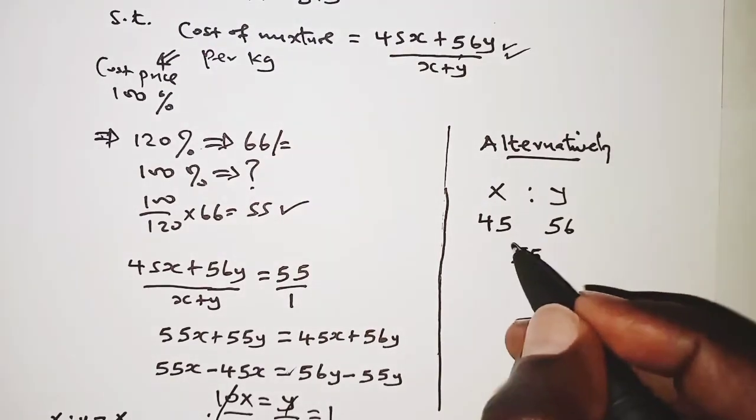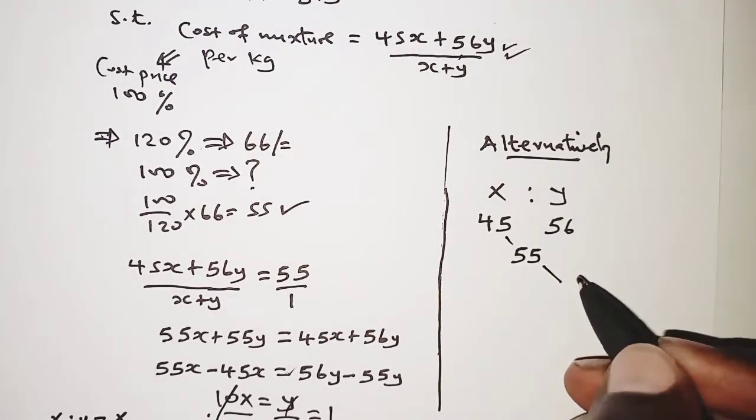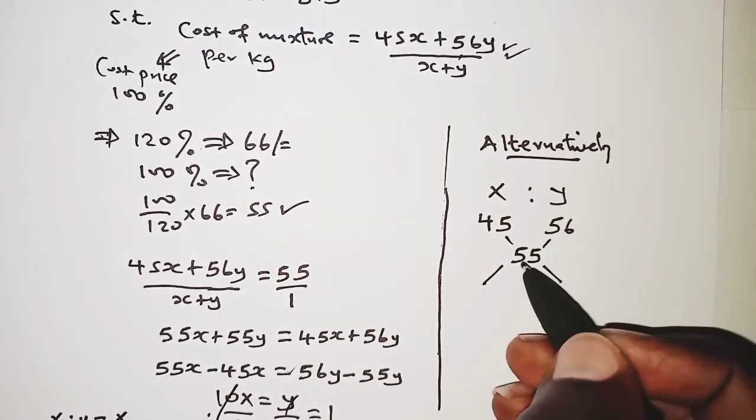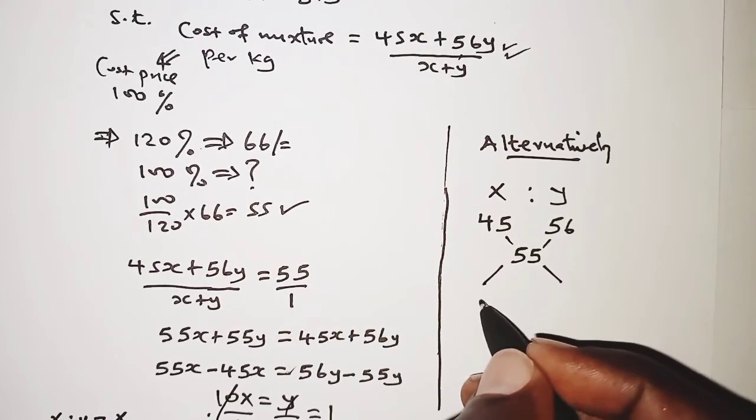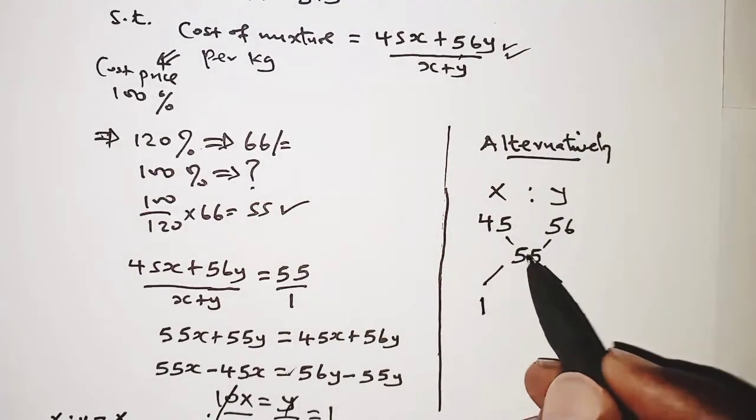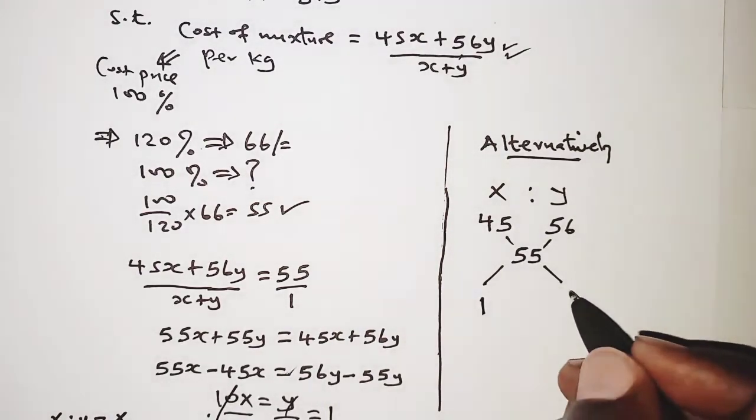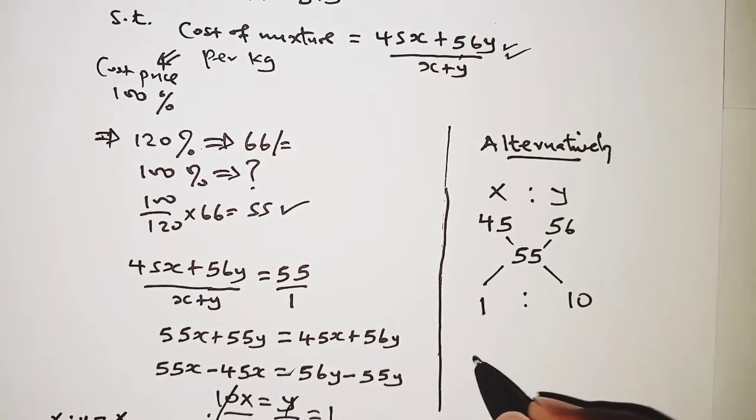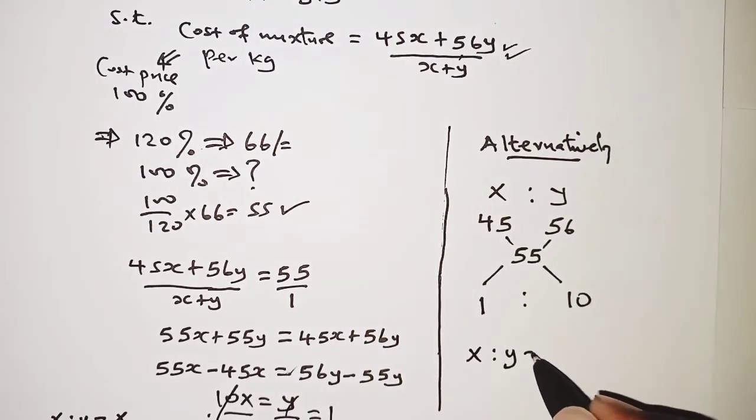So here we just subtract diagonally, so for this case 56 minus 55, that should be 1, and 55 minus 45, that should be 10. So the ratio of x to y is 1 to 10. So x to y is equal to 1 to 10.